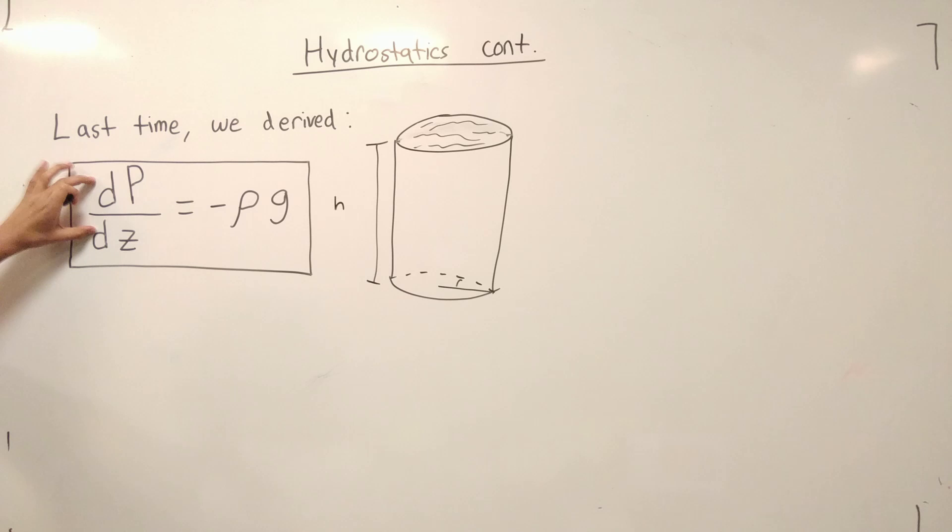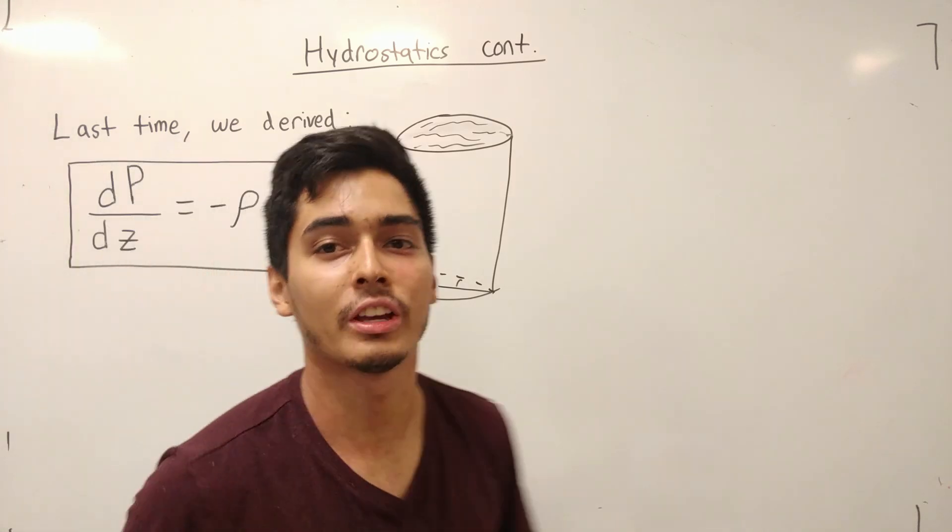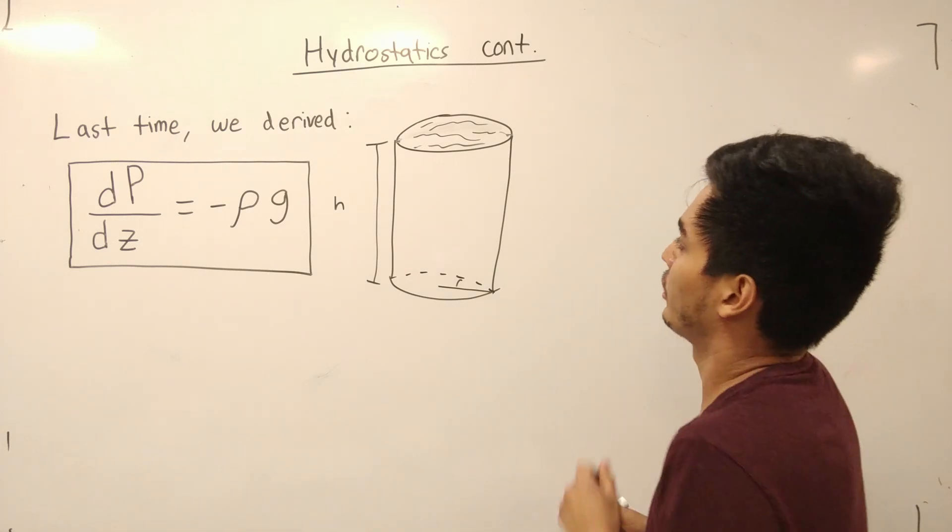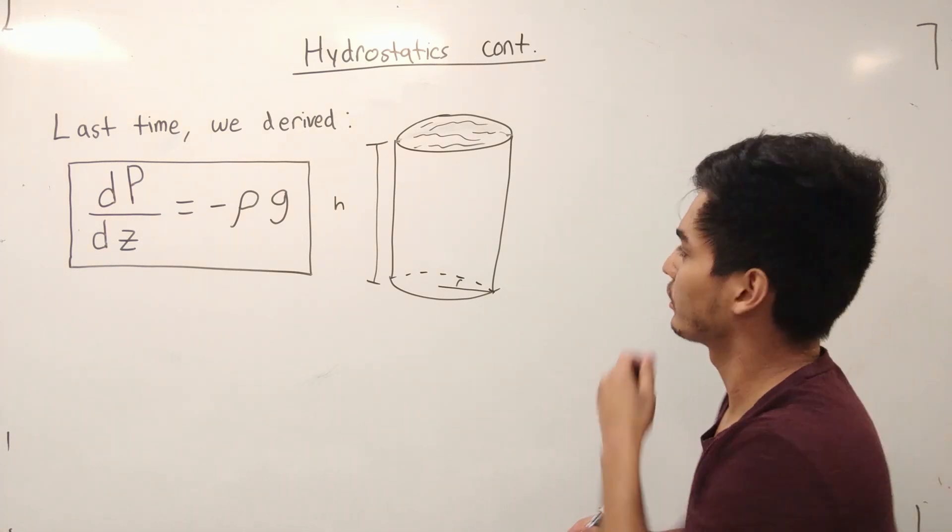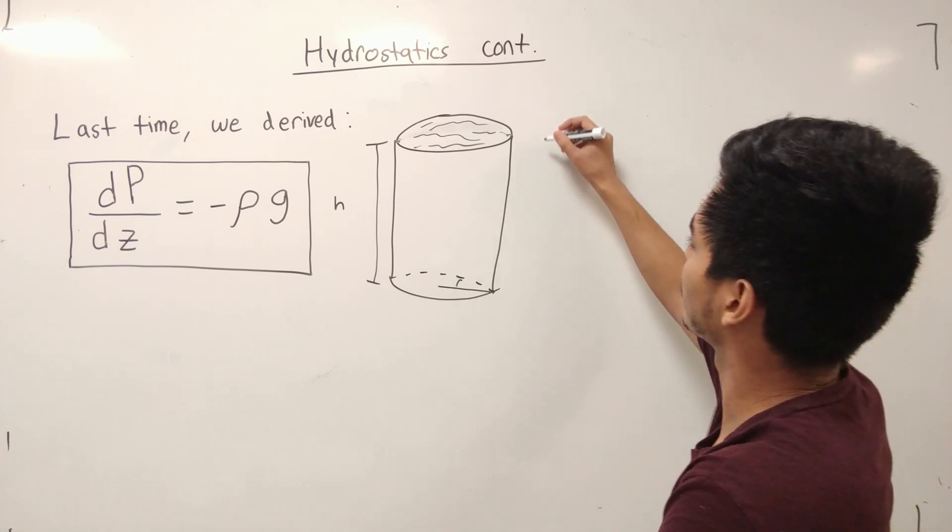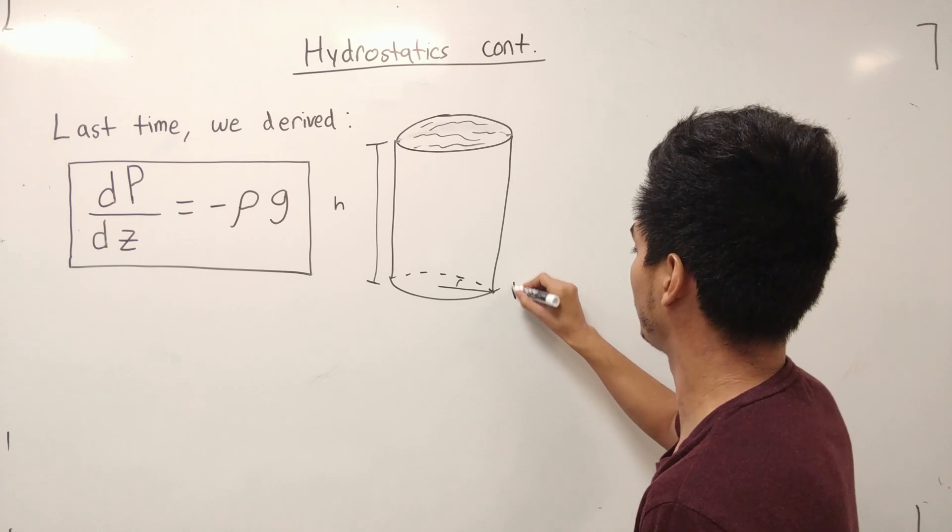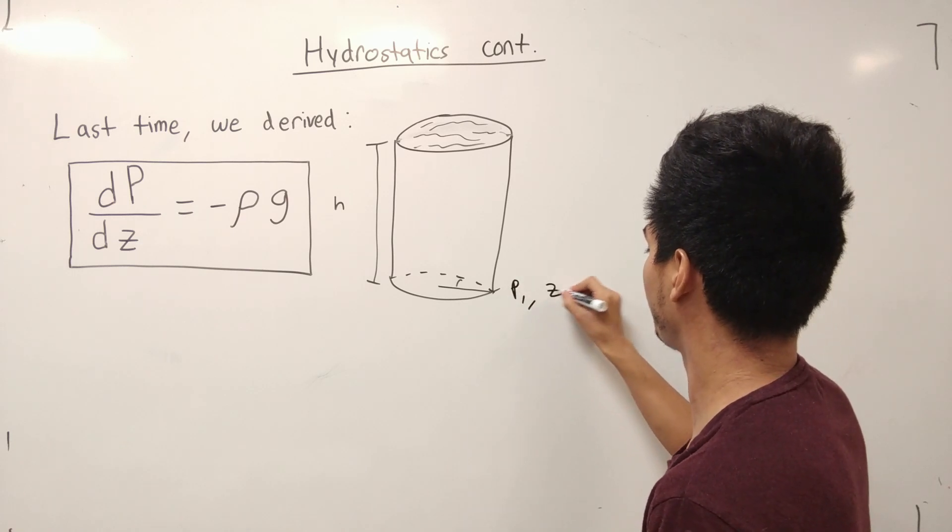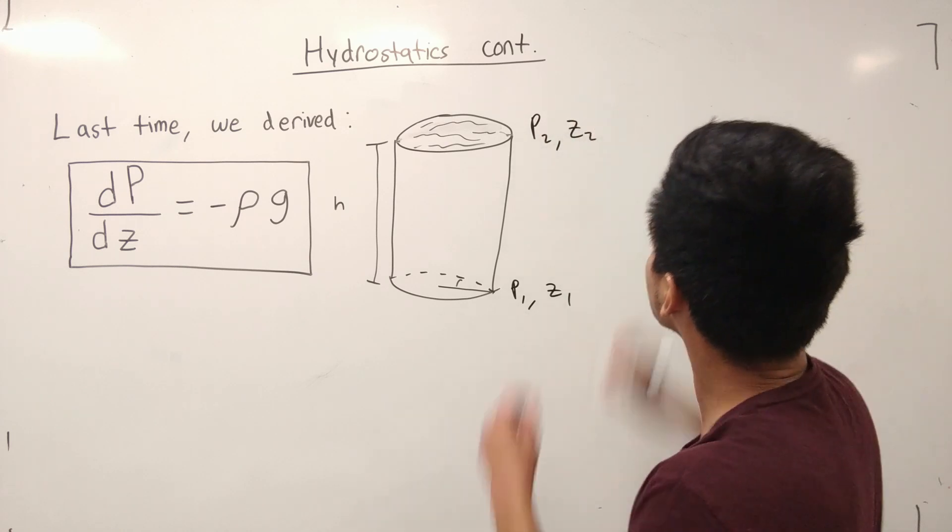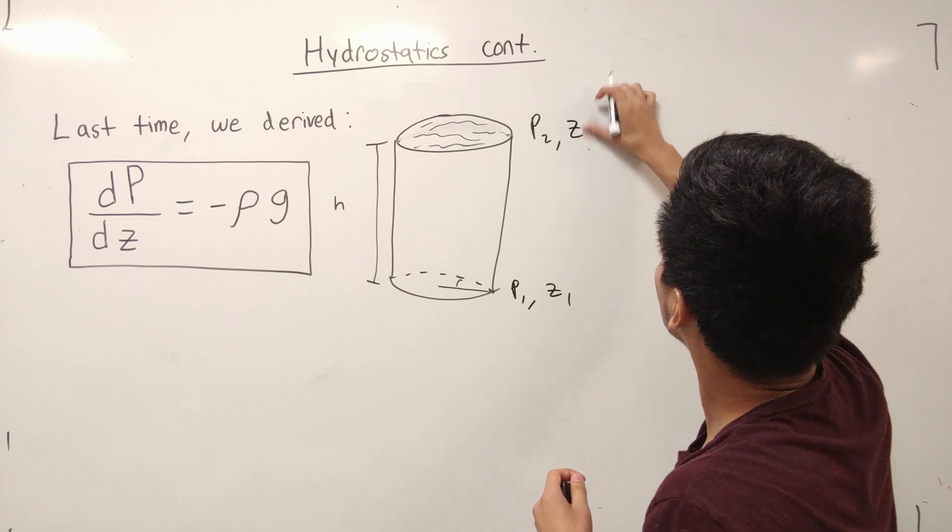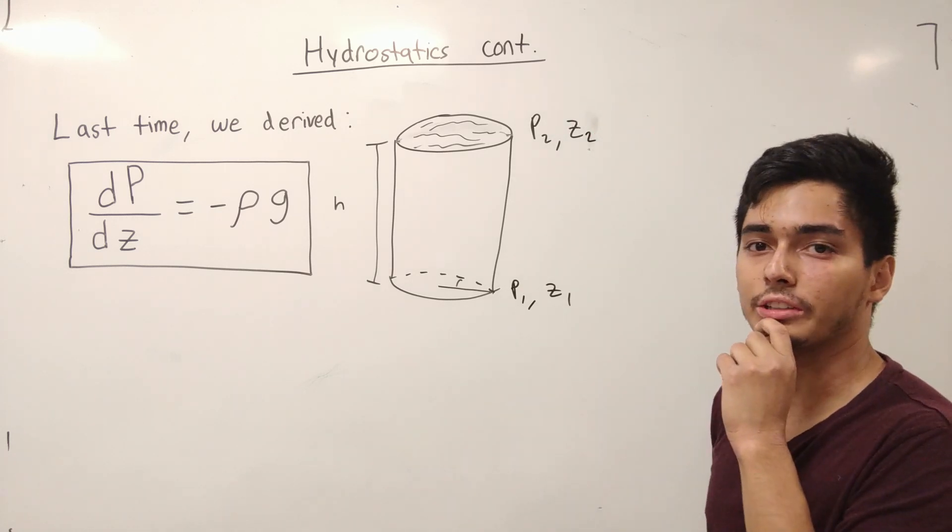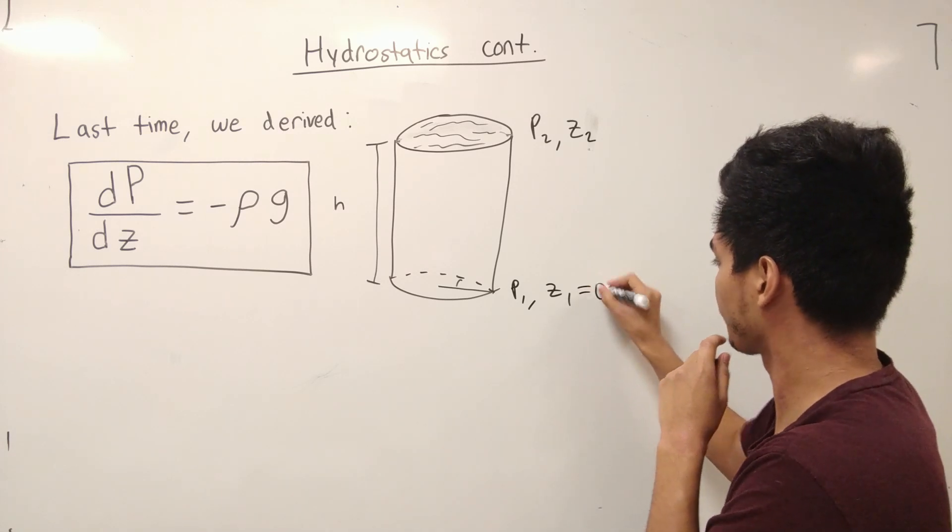So we can use this differential equation. If you haven't taken differential equations, this is going to be an example of how to integrate using some boundary conditions. What we have to do is select two points. We can say that this is going to be P1 and Z1, and this is going to be P2 and Z2. Let's set Z1 equal to 0.